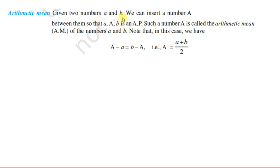If we have two numbers a and b, we can insert a number between them such that the three numbers form an arithmetic progression. If these three numbers are in AP, they will satisfy the condition that the difference between consecutive terms is constant: A minus a equals b minus A. From here you get A equal to a plus b divided by 2.